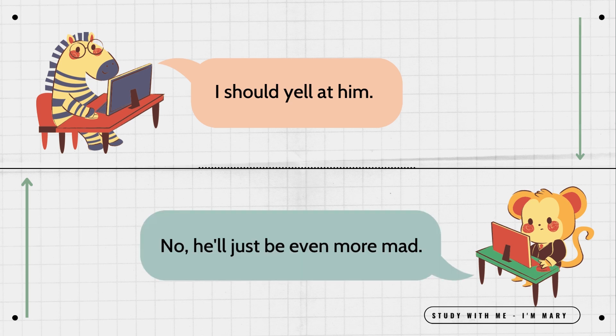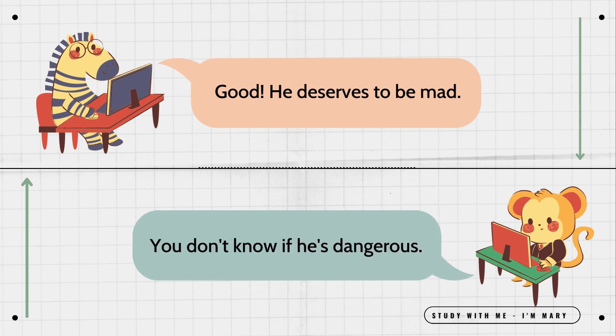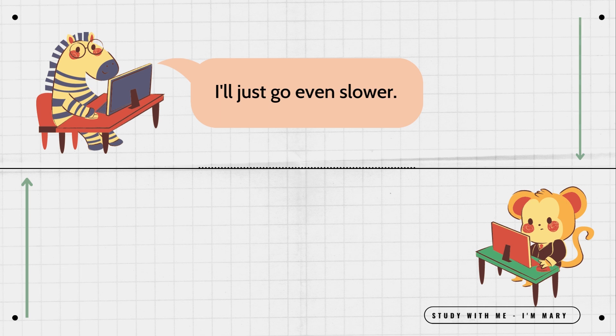I should yell at him. No, he'll just be even more mad. Good, he deserves to be mad. You don't know if he's dangerous. I'll just go even slower. That would really annoy him.